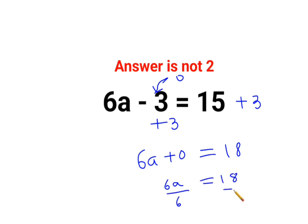The value of a we can find by dividing both sides by 6. 18 divided by 6 is 3. So therefore I can say the value of a equals 3.